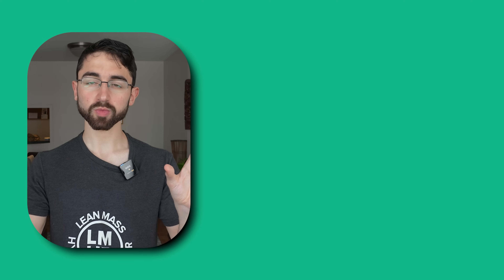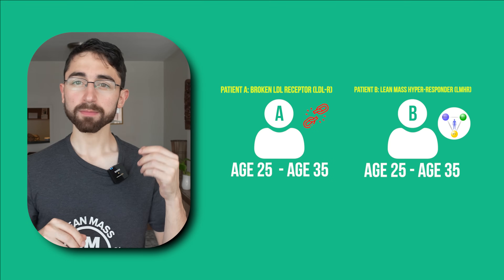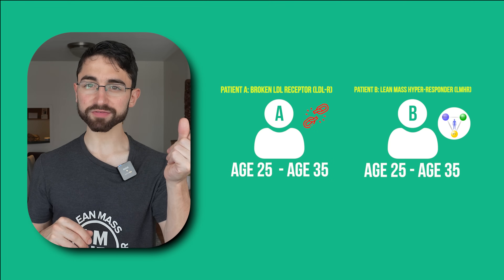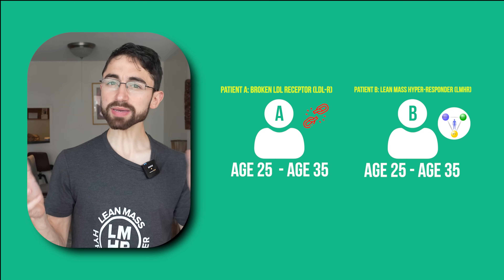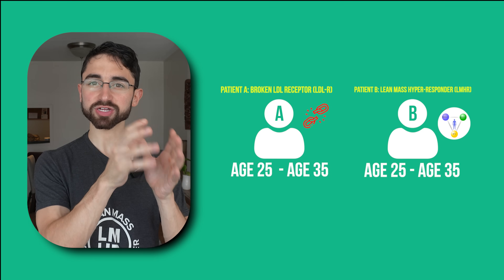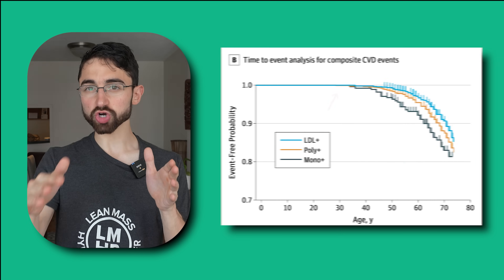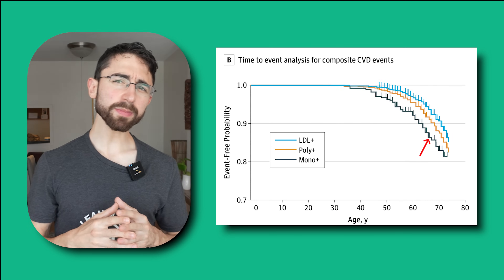So now let's return to our thought puzzle. Remember patients A and B? Patient A we basically established is monogenic FH — we snapped our fingers and broke their LDL receptor. So we can bucket them into the monogenic FH cause, which had the fastest drop-off, the steepest slope, and the worst prognosis.